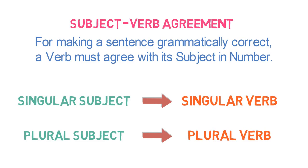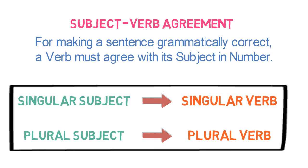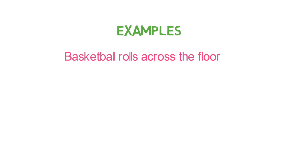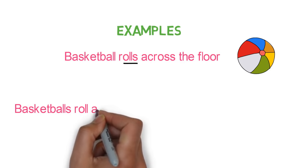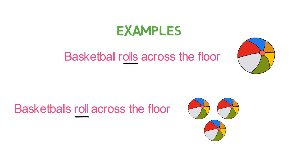This is the most general rule: singular subject must have singular verb and plural subject must have plural verb. Please note, this statement holds true only when the subject is in third person. For example, 'Basketball rolls across the floor.' Here basketball is singular, so singular verb rolls is used. 'Basketballs roll across the floor.' Here the noun is plural, so plural verb roll is used. Please check our previous video if you haven't already; I will give you the link in the description.